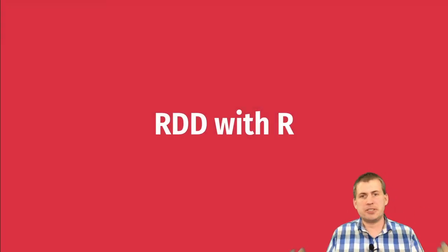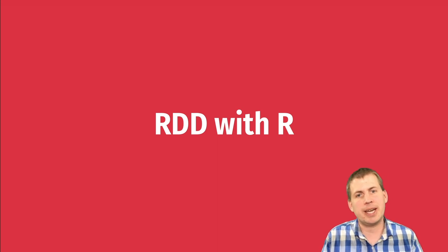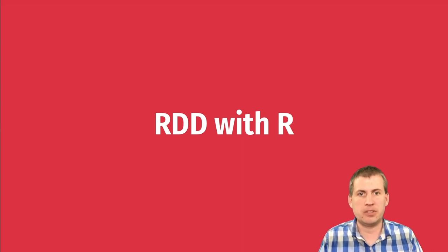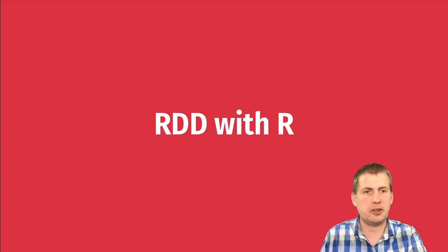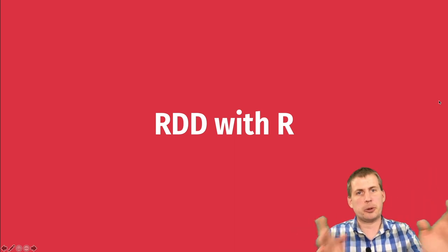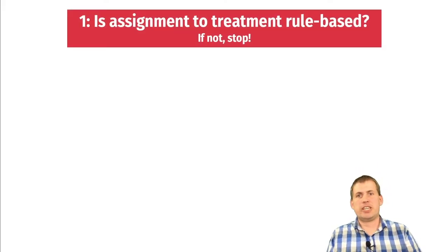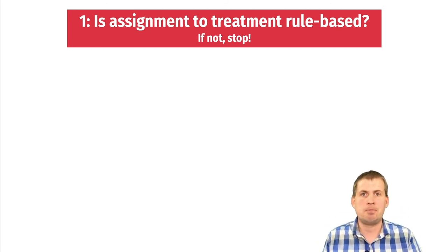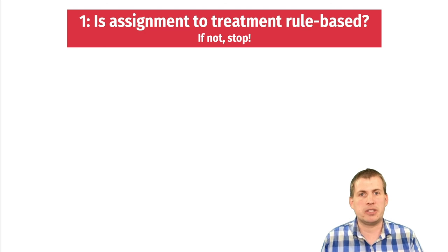We've talked about the theory behind regression discontinuity, how to measure the gap at the threshold, and the main concerns to think about. Now we're going to do it with R using the AIG example. We'll start by checking if assignment to treatment is rule-based. If it is, we can do regression discontinuity; if not, we can't. The only way this works is if there's some arbitrary rule deciding program access.